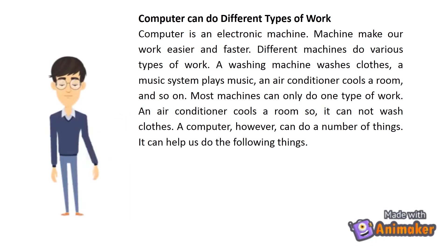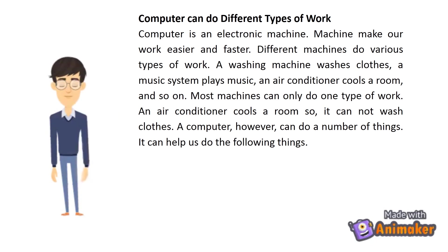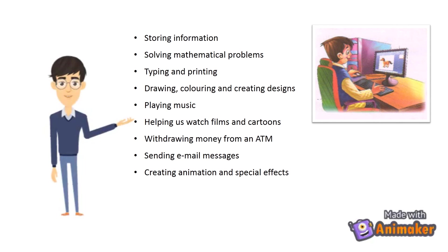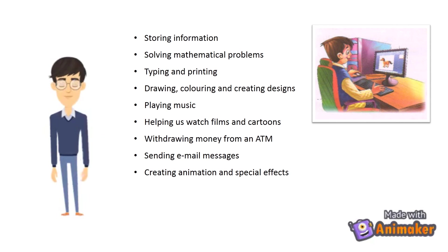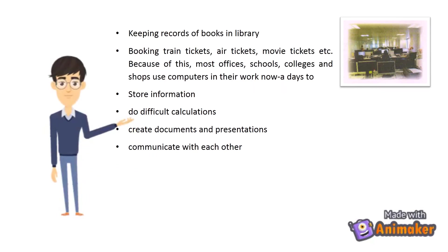An air conditioner cools a room, so it cannot wash clothes. A computer, however, can do a number of things. It can help us with: storing information, solving mathematical problems, typing and printing, drawing, coloring and creating designs, playing music, watching films and cartoons, withdrawing money from an ATM, sending email messages, creating animation and special effects, keeping records of books in a library, and booking train tickets, air tickets, movie tickets, etc.